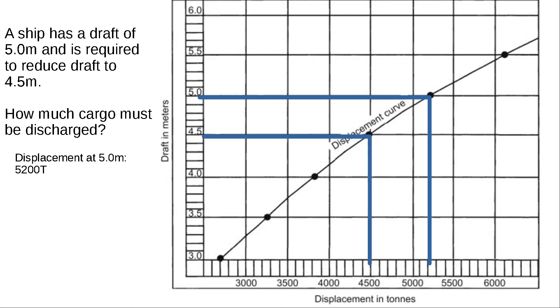At the 4.5 meter draft, displacement corresponds to 4,500 tons. The difference of these gives us a difference of 700 tons. What this means is that to effect this half meter change in draft, we require to discharge 700 tons of cargo.